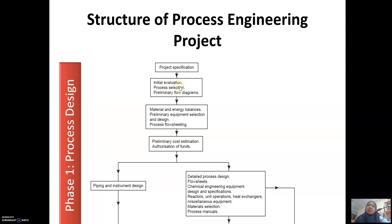After that, the next process is initial evaluation — your process selection. What is your preferred process? Because normally, in order to produce a certain type of product, there are several types of processes you can use. After considering all the process selection options, you may need to show a preliminary flow diagram to clearly see what processes may be involved. Then you need to do material and energy balances.